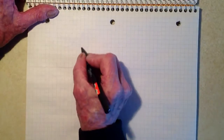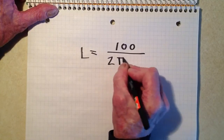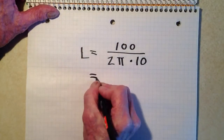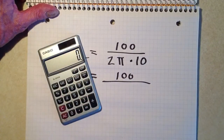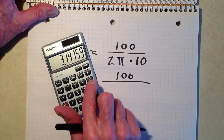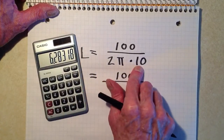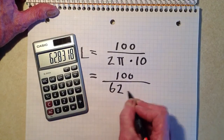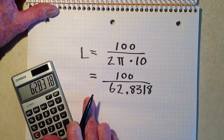So L equals 100 divided by 2π times 10 megahertz. Now's the time to bring in the calculator: 3.14159 times 2 equals 6.28318, times 10 equals 62.8318. That gives us our inductance in microhenrys.